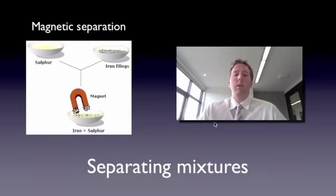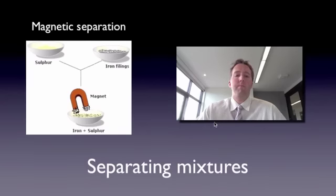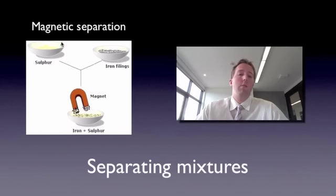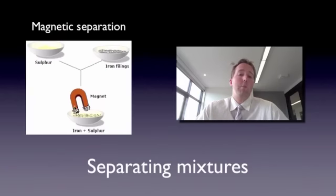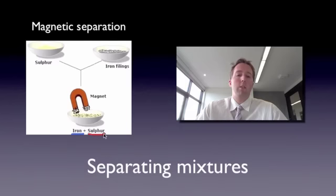When chemists have mixed materials together, or find materials that are mixed, often they want to separate those mixtures again. There are a few ways to separate mixtures. The first example is magnetic separation. Here I've got some sulfur — a yellow powder — and some iron filings, just a little bit of metal. If I mix those two things together, I have a mixture of iron and sulfur powder. Magnetic separation involves using a magnet to collect the magnetic parts of a mixture and separating them from the non-magnetic parts. Iron is magnetic and sulfur is not, so when I put the magnet over the top, the iron comes out and the sulfur stays.